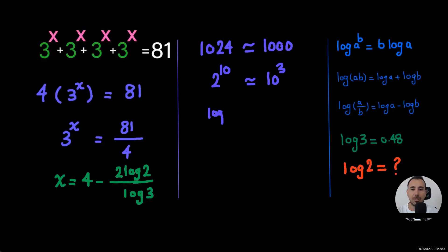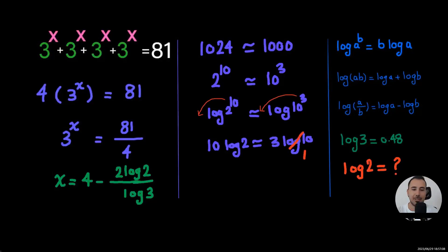And now let's take logs from both sides. And we know that exponents can come to front. Let's just do that. So we're going to have 10 log 2 equals 3 log 10. And the base of log is 10. So log 10 is 1. So now we have the approximation. Log 2 is approximately equal to 0.3.